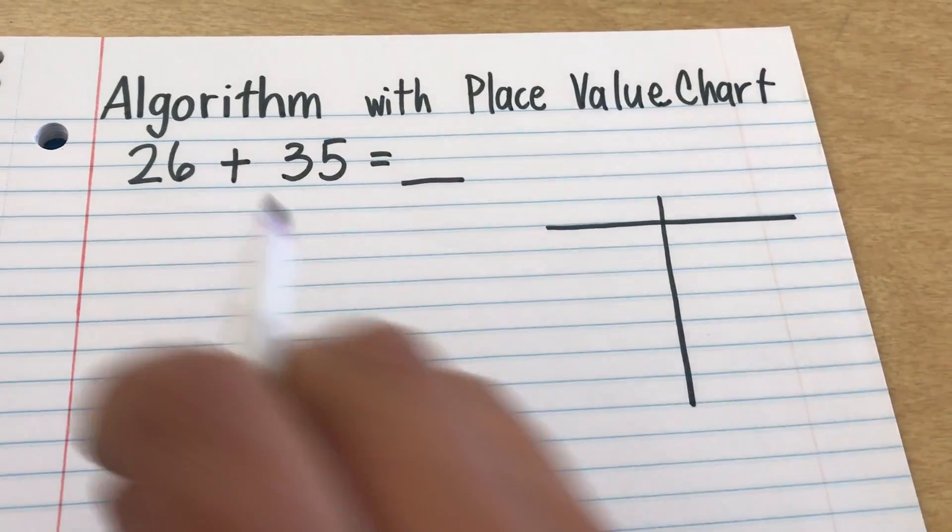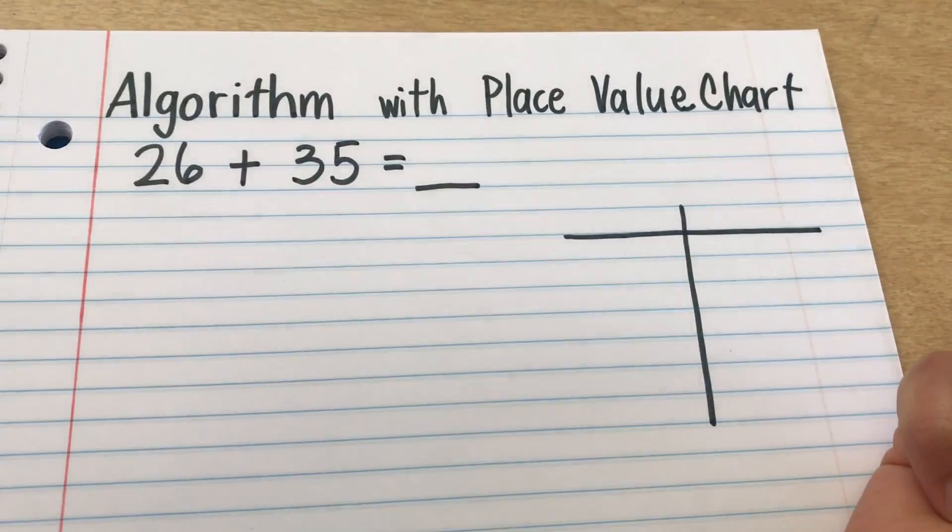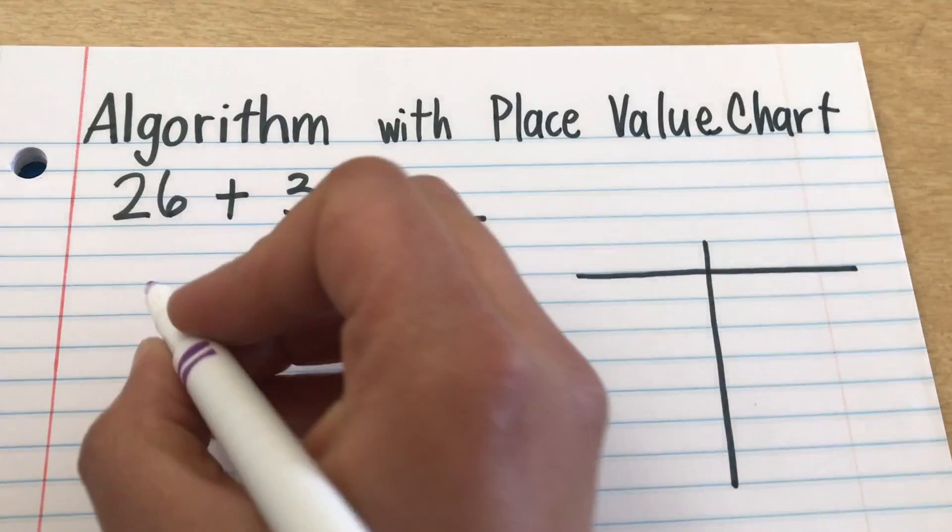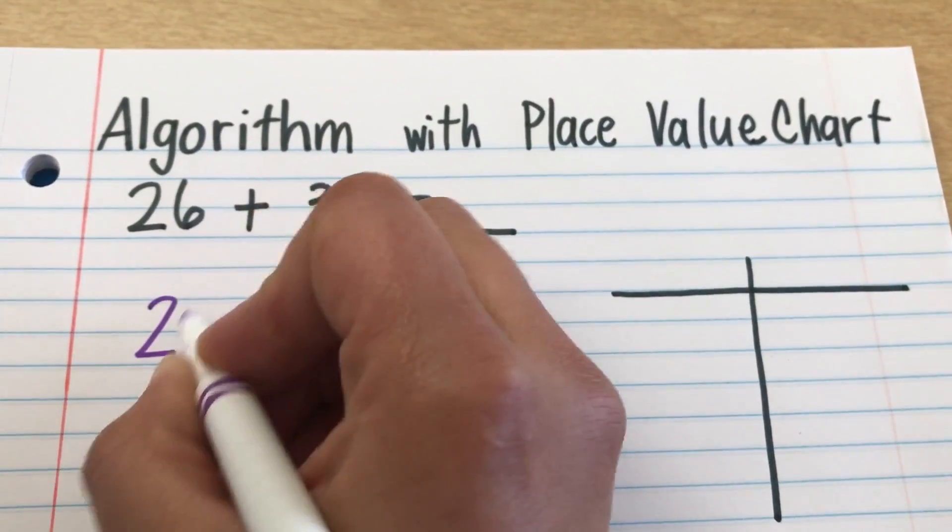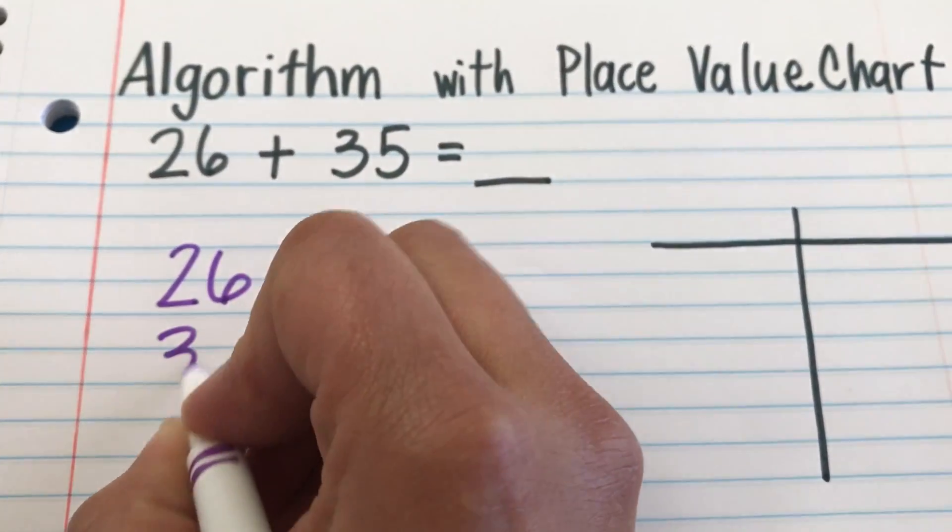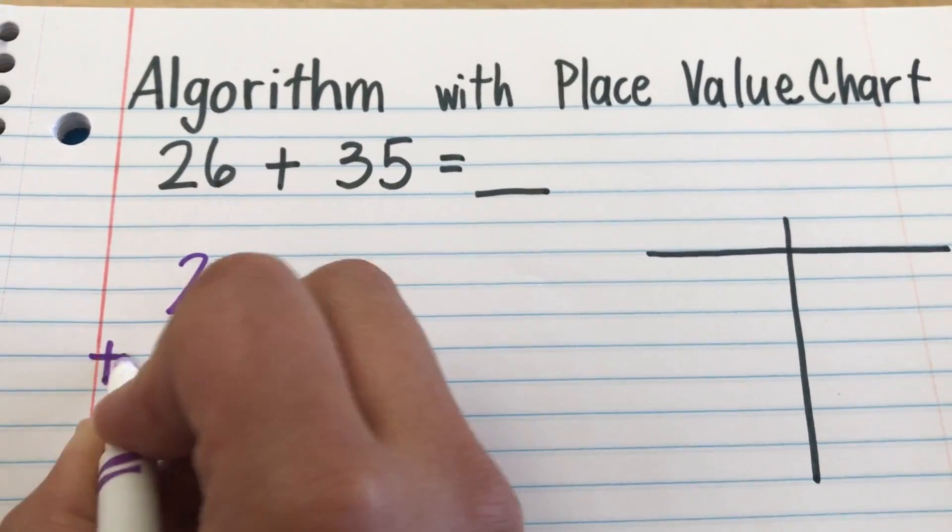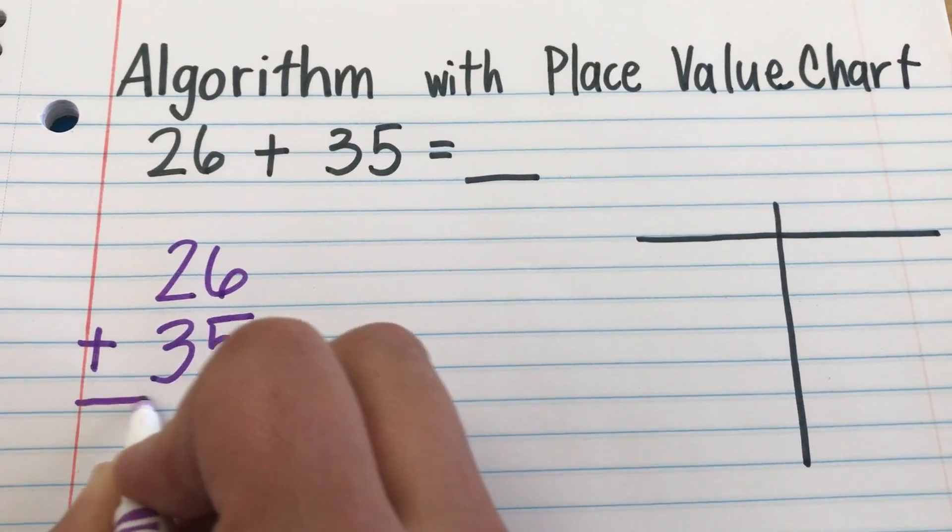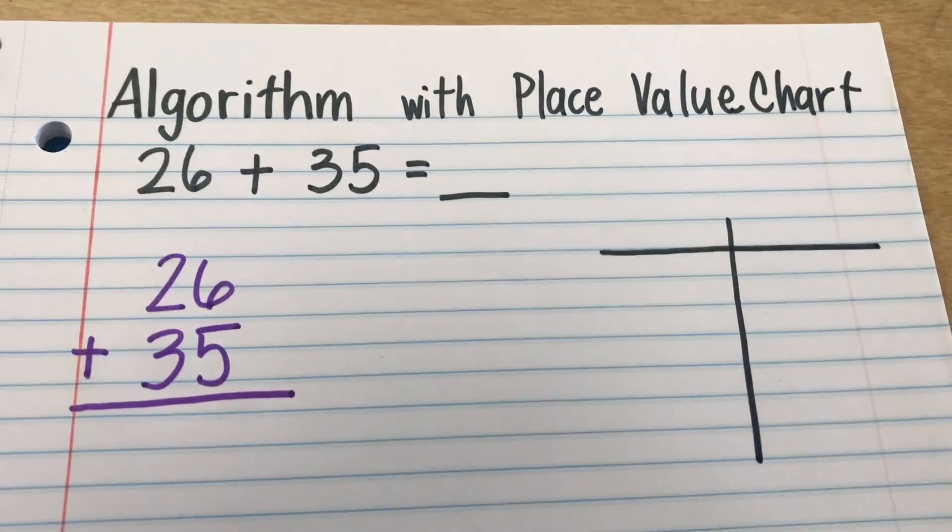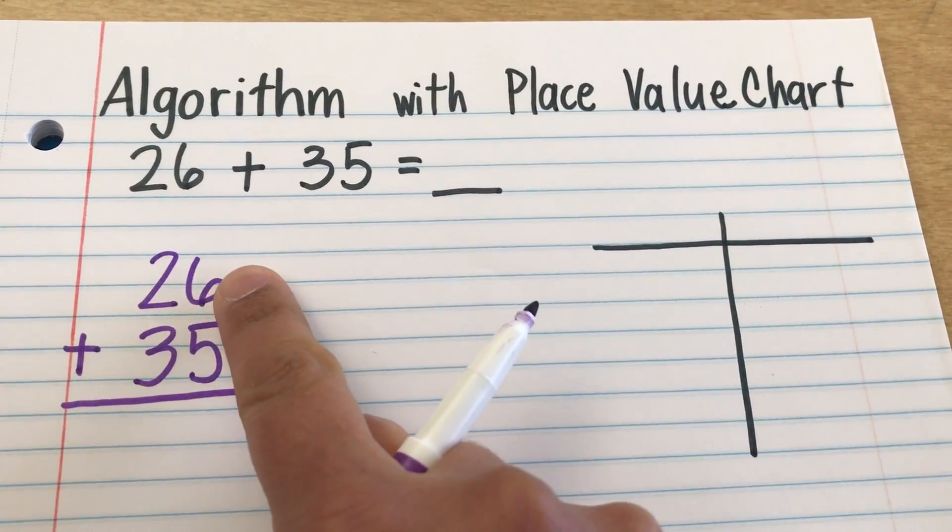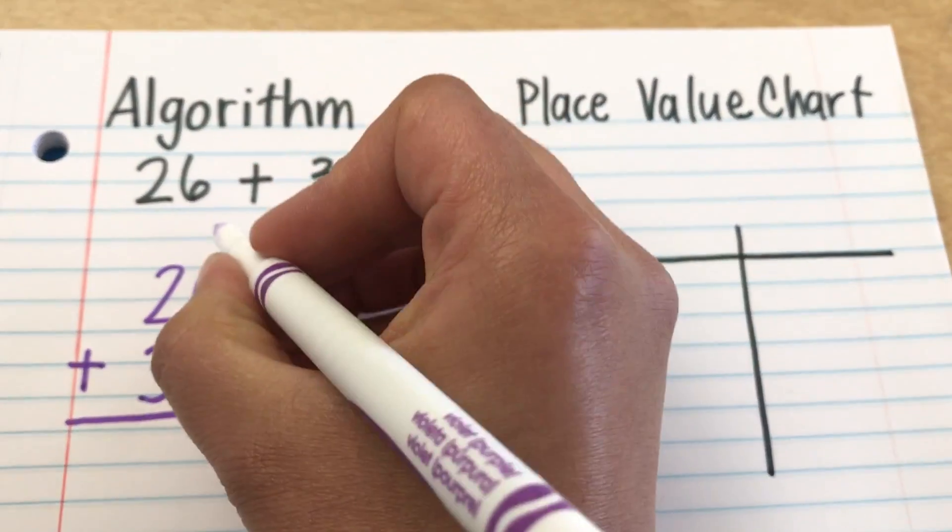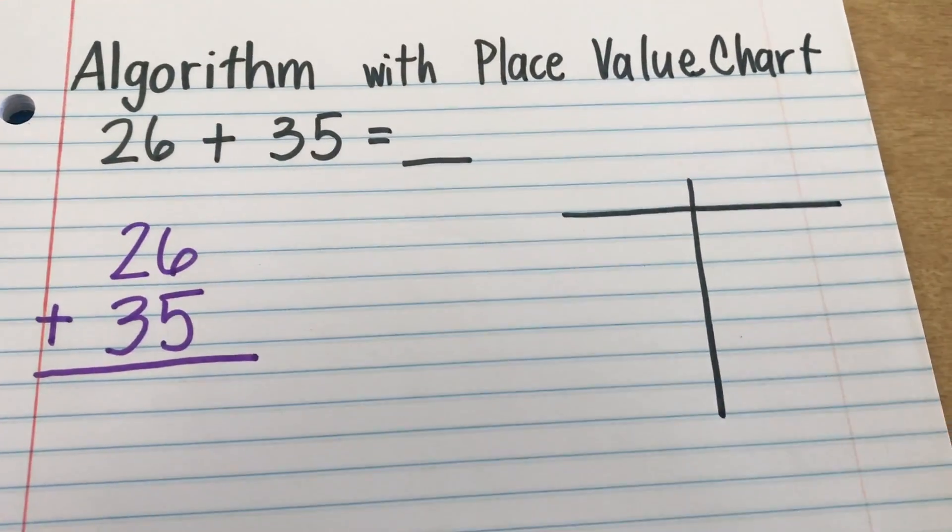This is algorithm with place value chart. So we have our equation 26 plus 35. We're going to rewrite it vertically. So we're going to write 26. Then we're just going to bring down the 35. Don't forget our addition sign with our equal sign. Make sure that you write it and you line up the 1s and you line up the 10s. Okay? Because that's really important.